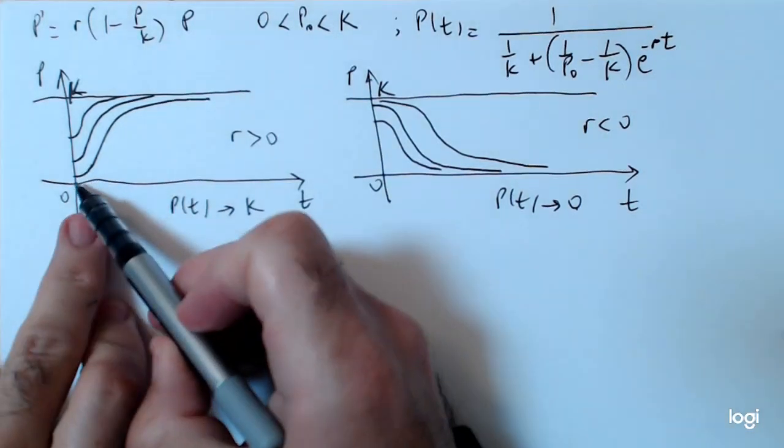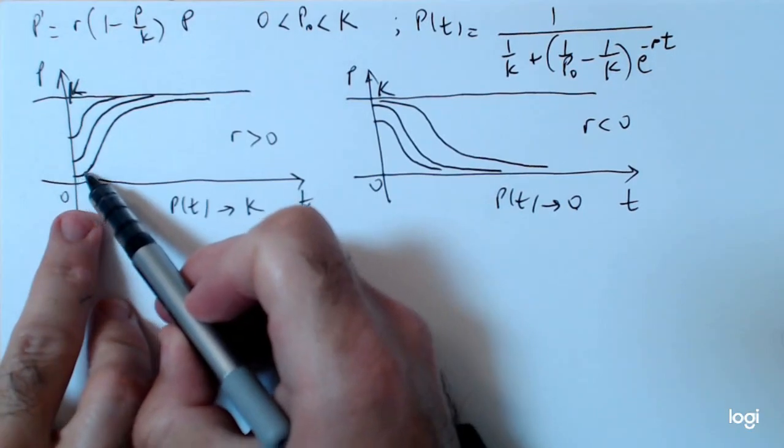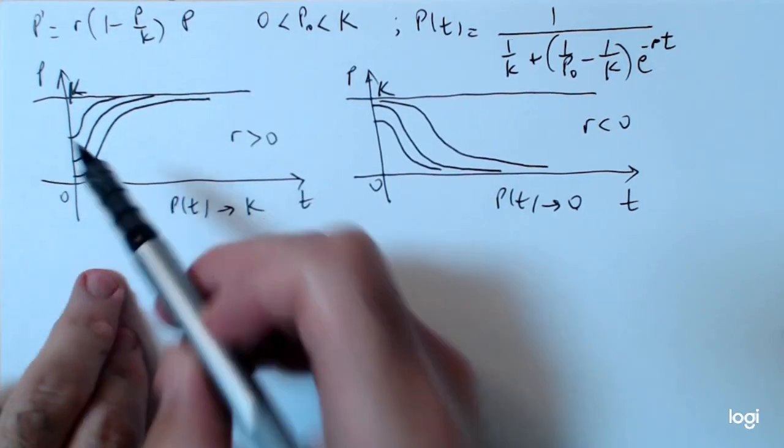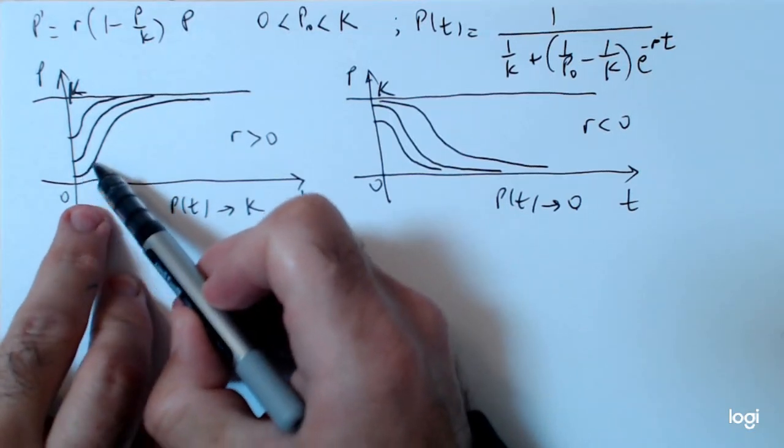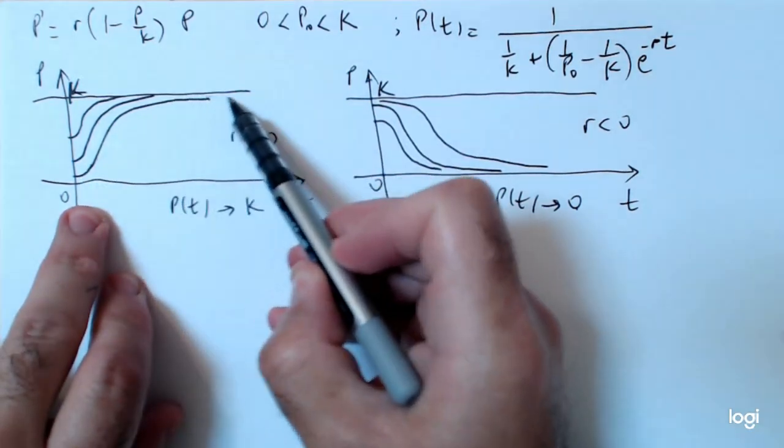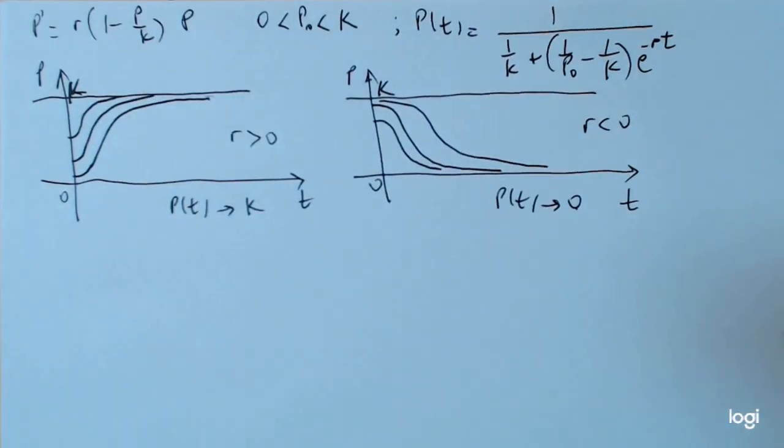Notice that the growth rate actually looks kind of exponential in the beginning, and we'll talk about that more in the context of the epidemic model soon enough. And then there's going to be an inflection point after which the solution approaches k asymptotically.